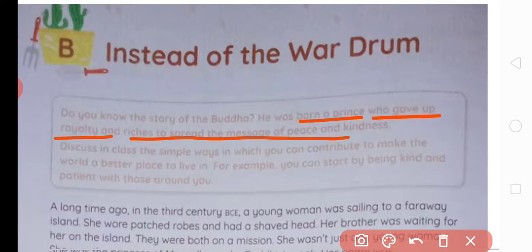Pehle toh kehna hai ki discuss karo the simple ways in which you can contribute to make the world a better place to live in. Ab aap is duniya ko behtar banane ke liye kya kar sakte ho? We can do numerous things: we can take steps to reduce pollution, help others whenever we find them in need, and be truthful in our actions. All these things will lead to a better world.